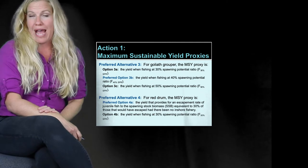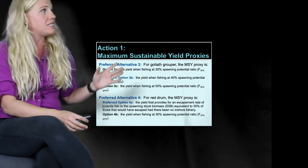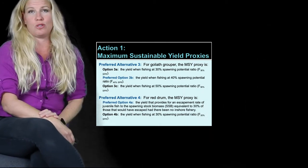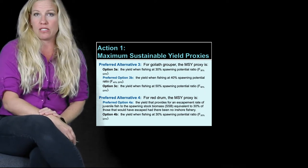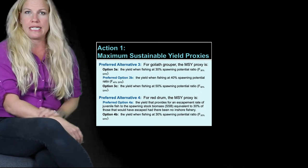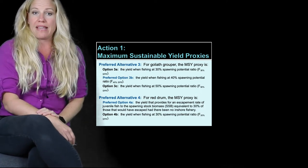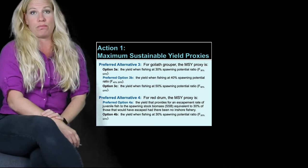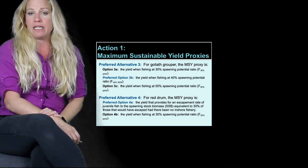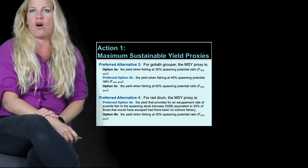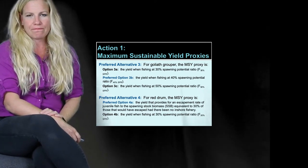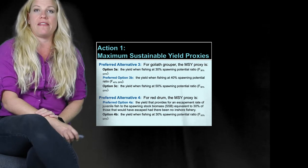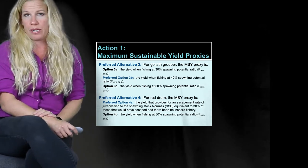Alternative one is the no action alternative, which would leave the maximum sustainable yield or proxy undefined for those species. Alternative two is one of the council's current preferred alternatives, and would define an MSY proxy. Option 2A would set that proxy at the yield when fishing at 20% spawning potential ratio. Option 2B, which is the council's current preferred option, would set the MSY proxy at 30% of the spawning potential ratio for all stocks with undefined MSYs.